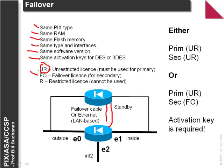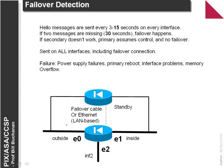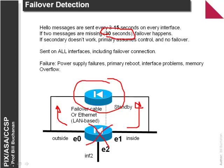We need an unrestricted license and a failover license for the secondary device — a restricted license cannot be used. The two firewalls are connected in parallel and most of the time the secondary will not route any traffic but will monitor the primary. Hello messages are sent out every 3 to 15 seconds (15 seconds by default), and if two hello messages are missing the secondary device will take over, assuming all IP addresses and MAC addresses. If we have a failover cable, it actually knows all the connections so there will be no difference in the connections occurring.